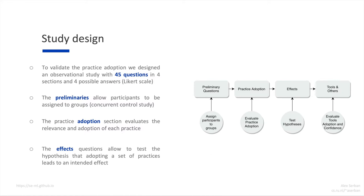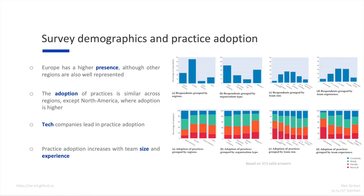Following up, there is a section which measures the practice adoption. Afterwards, there is a section which we call effects, and this section allows us to test the hypothesis that adopting a set of practices leads to a desired effect. There were in total 4 effects, also mined from the literature together with the practices. The survey ended with a section meant to evaluate the tools used by practitioners and their confidence in the answers. In total, we obtained over 350 results; however, after filtering, we only found 313 valid answers.